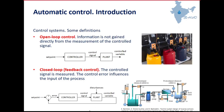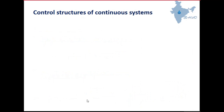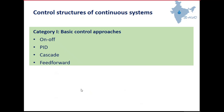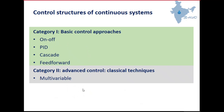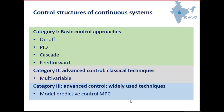Now let's look at different control structures. Some authors classify control structures depending on industrial application. In the first category — basic control approaches — we can see on/off, PID, cascade, or feed forward. In the second category — advanced control — we will see the multivariable controller. In the third category — advanced control techniques widely used in industry — we will see model predictive control.